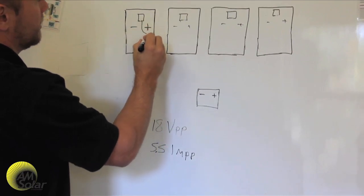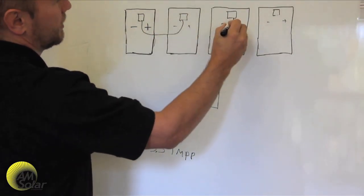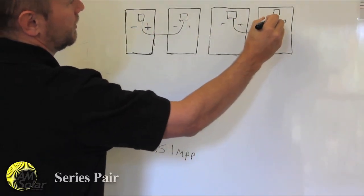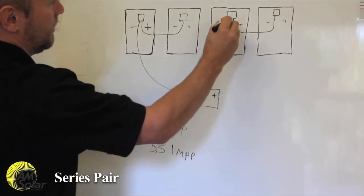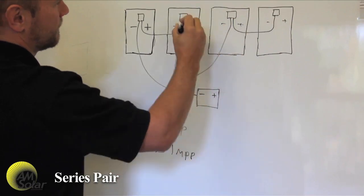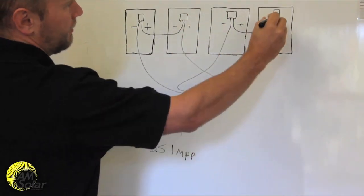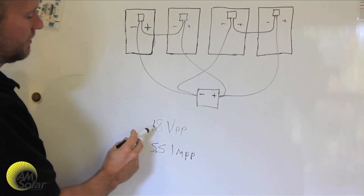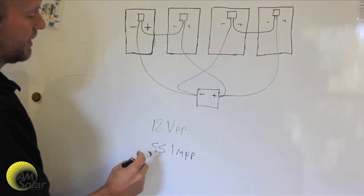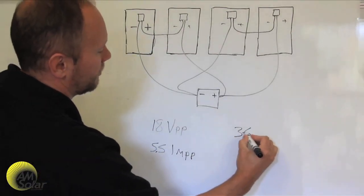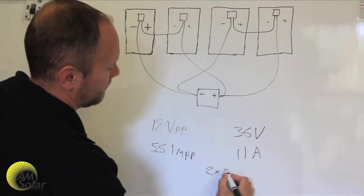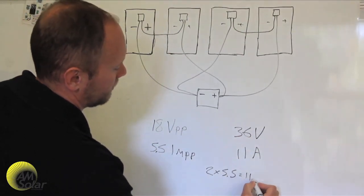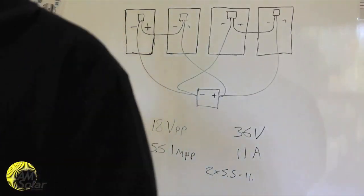When you have two panels in series connected and parallel to other pairs of series connected panels, you have what we call a series pair. In this orientation, you get a voltage of two times the voltage of an individual panel and a current equivalent to the number of pairs times the individual panel current. If you had four 100 watt panels, each with a VMPP of 18 volts and an IMPP of 5.5 amps, your charge controller would see 11 amps at 36 volts.